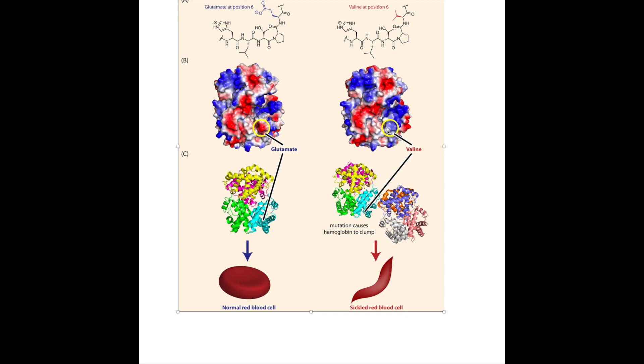When they clump together, that actually prevents the hemoglobin from doing its job of binding to oxygen. In fact, so much of the hemoglobin clumps that it changes the shape of the red blood cell. This is what a normal red blood cell would look like.